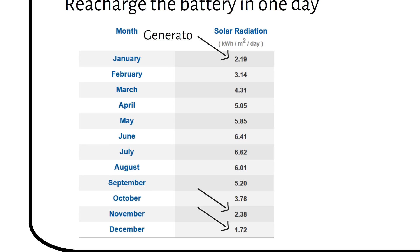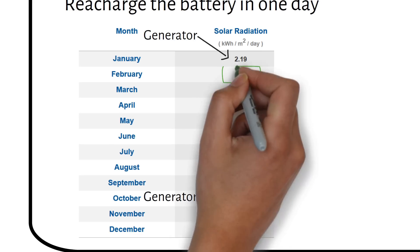That's why we will have a generator that supplies energy to the batteries during these months of low sunshine. Now, February is the month with the fewest sun hours.